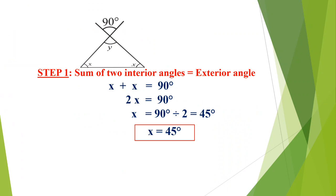Now one more problem. Here we are having three unknown values: x appearing two times and y. We can use the same property — x and another x are opposite to the 90 degree angle. So x plus x equals 90 degrees. If you add the same number two times, we can write 2x. So 2x equals 90 degrees. A multiplied number becomes divide when moved, so x equals 90 divided by 2, which gives x equals 45 degrees. Both x values are 45 degrees.